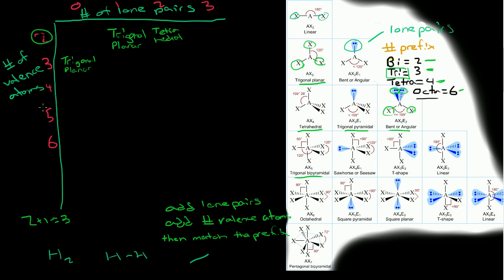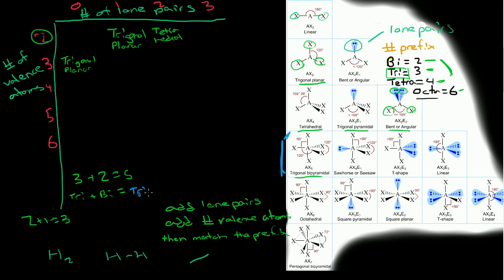We haven't defined what 5 is yet. If we have 3 valence atoms and 2 lone pairs, we can't directly match that with a single prefix. But if we substitute in prefixes — tri for 3, and bi for 2 — we get tri plus bi, which gives us trigonal bipyramidal. So 3 atoms plus 2 lone pairs equals 5, and the shape is trigonal bipyramidal.